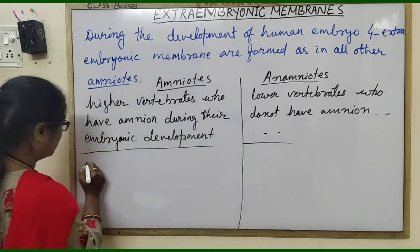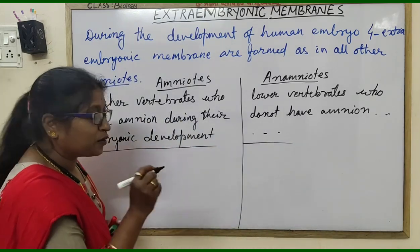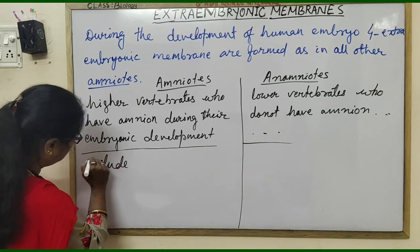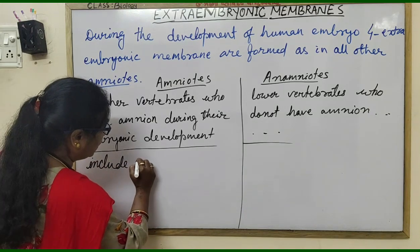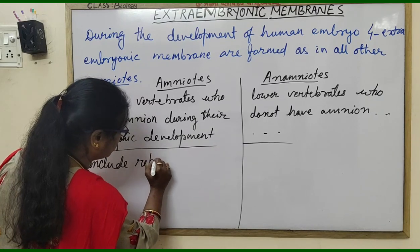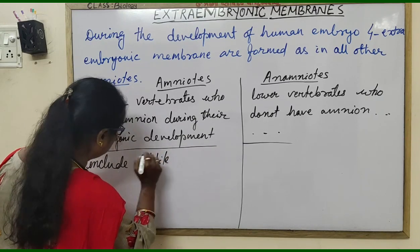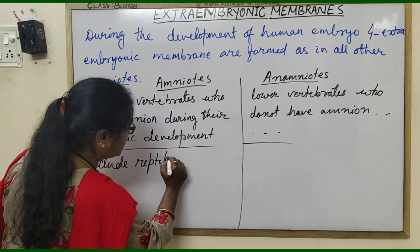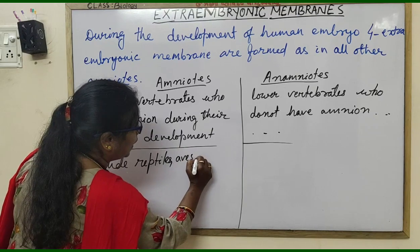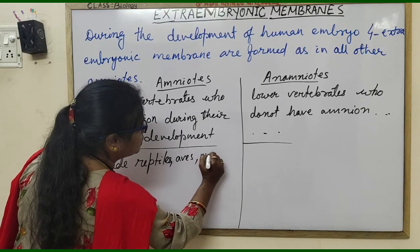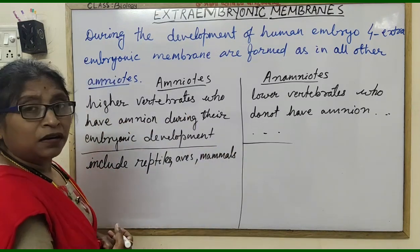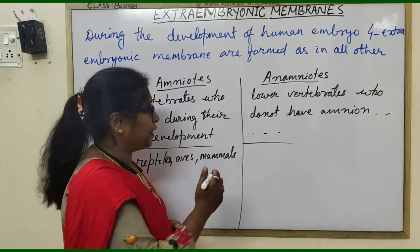Amniotes include the reptiles, birds, and mammals — including human beings. Anamniotes include class Pisces, that is fish, and amphibians. Anamniotes need to go to water for reproduction, because they require an aquatic medium, whereas amniotes do not need to go to water for reproduction.